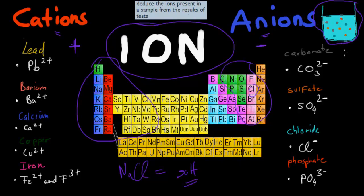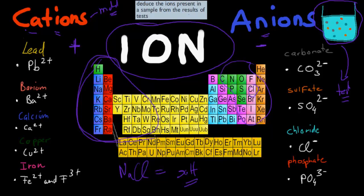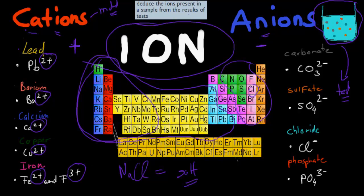We have a sample and we don't know what's inside. We can do different types of tests to figure out what kind of ions are in solution. We often use the principle that you can form insoluble or soluble salts to test what's actually in that solution. The cations were the metals — the ones you specifically need to know are these five: lead, barium, calcium, copper, and iron. Lead is Pb2+, barium is Ba2+, calcium is Ca2+, copper is Cu2+, and iron has two versions: either Fe2+ or Fe3+.